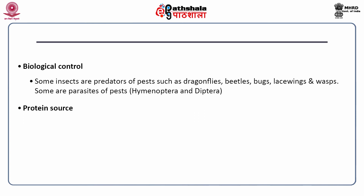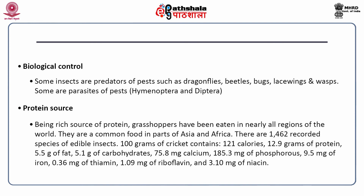Insects are also a rich source of protein. Grasshoppers have been eaten in nearly all regions of the world and are a common food in parts of Asia and Africa. There are 1,462 recorded species of edible insects. For example, 100 grams of cricket contains 121 calories, 12.9 grams of protein, 5.5 grams of fat, 5.1 grams of carbohydrate, 75.8 mg calcium, 185.3 mg phosphorus, 9.5 mg iron, 0.36 mg thiamine, 1.09 mg riboflavin and 3.1 mg niacin — illustrating how nutritious insects are used across the world.